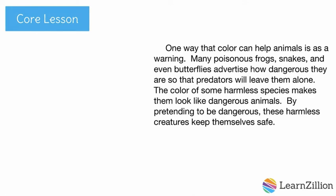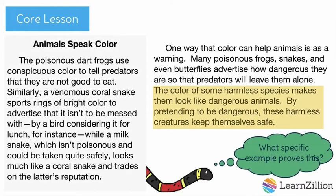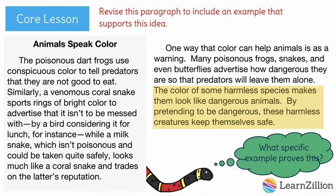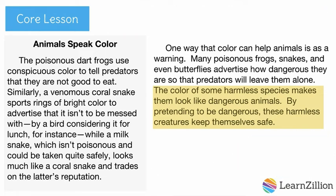We're making great progress supporting our ideas with examples. However, I noticed that I have another idea in this paragraph that I haven't supported with at least one clear example. I talk about how some animals' color mimics or copies other, more dangerous animals and tricks predators into leaving them alone. What a cool adaptation! I need to go back and find an example to support it and then revise my paragraph. Look back at the article for a specific example that supports this idea, then revise the paragraph on your practice sheet. Pause the video now. When I read this article, I see that the milk snake tricks predators into thinking it is dangerous because of its color.